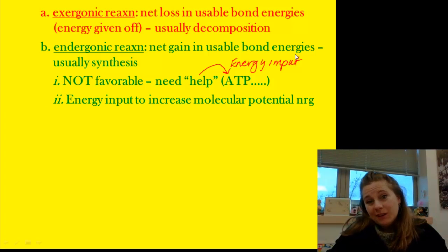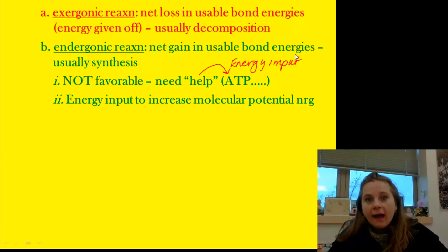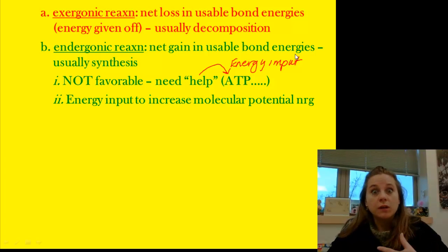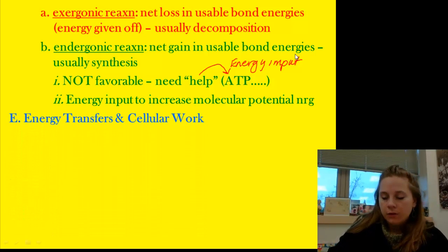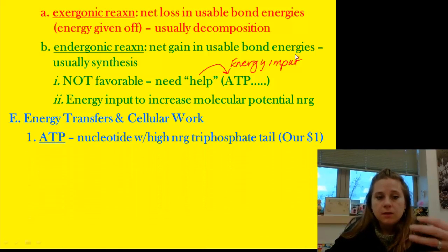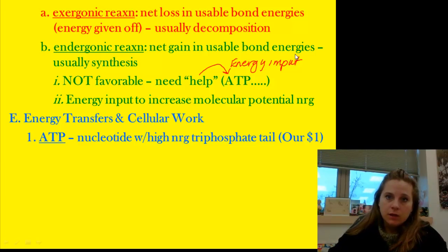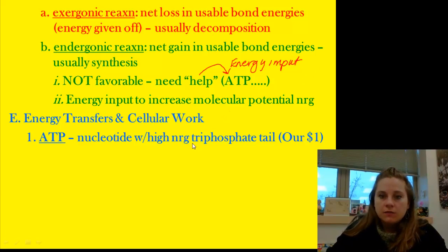ATP must be constantly replenished because it's constantly lost in transfers, so we can have a stored cache of molecular potential energy for when our cells need it. ATP is a nucleotide — a modified adenine molecule, a nucleic acid derivative — called adenosine triphosphate, and it has a really high-energy triphosphate tail.